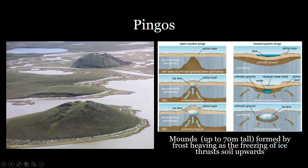You can see those mounds here. Additionally, pingos can be formed from lakes, where water from a lake seeps into the ground and advancing permafrost causes that water to freeze and form an ice lens that heaves the ground upward. Those are the two types: an open-system pingo formed from discontinuous permafrost with an artesian well, and a closed-system pingo formed from a lake with advancing permafrost.